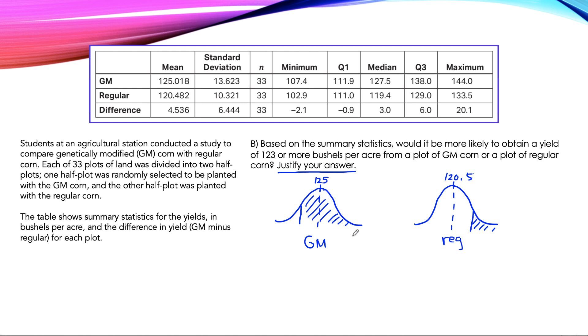From this picture alone, we can see that the area under the curve or the probability of picking GM corn is much higher than the probability of picking regular corn. So how would I answer? I'd say something like this: Because 123 is below the mean of GM and above the mean of regular corn, it is more likely GM corn will obtain a yield of 123 or more bushels per acre.